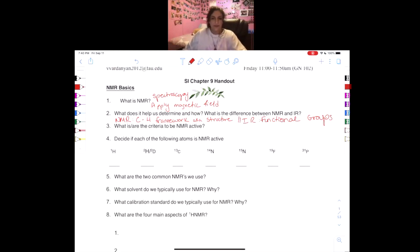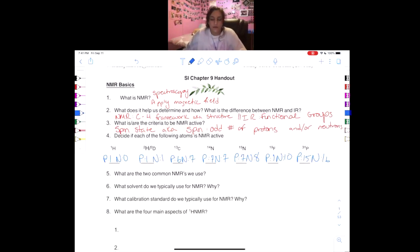All right, so in order for something to be NMR active, it has to have a spin state, aka it has to have spin. And all this means is that you have an odd number of protons and/or neutrons. So I actually went ahead and I wrote the number of protons and neutrons for each of these molecules, and now together we're going to see whether or not they have a spin.